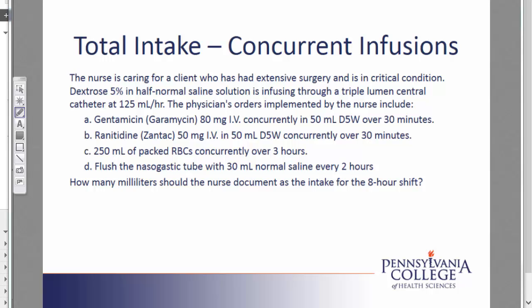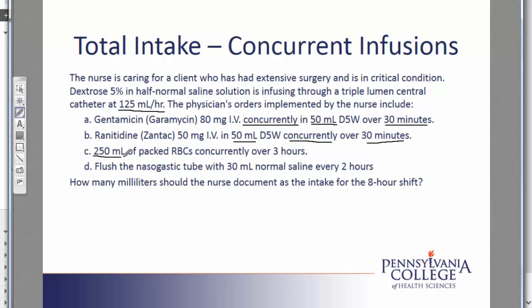The nurse is caring for a client who has had extensive surgery and is in critical condition. Dextrose 5% and half normal saline solution is infusing through a triple lumen central catheter at 125 mL per hour. The physician's orders include gentamicin 80 mg IV concurrently in 50 mL over 30 minutes, Zantac 50 mg IV in 50 mL D5W concurrently over 30 minutes, 250 mL of packed red blood cells concurrently over 3 hours, and a flush of the nasogastric tube with 30 mL of normal saline every 2 hours.